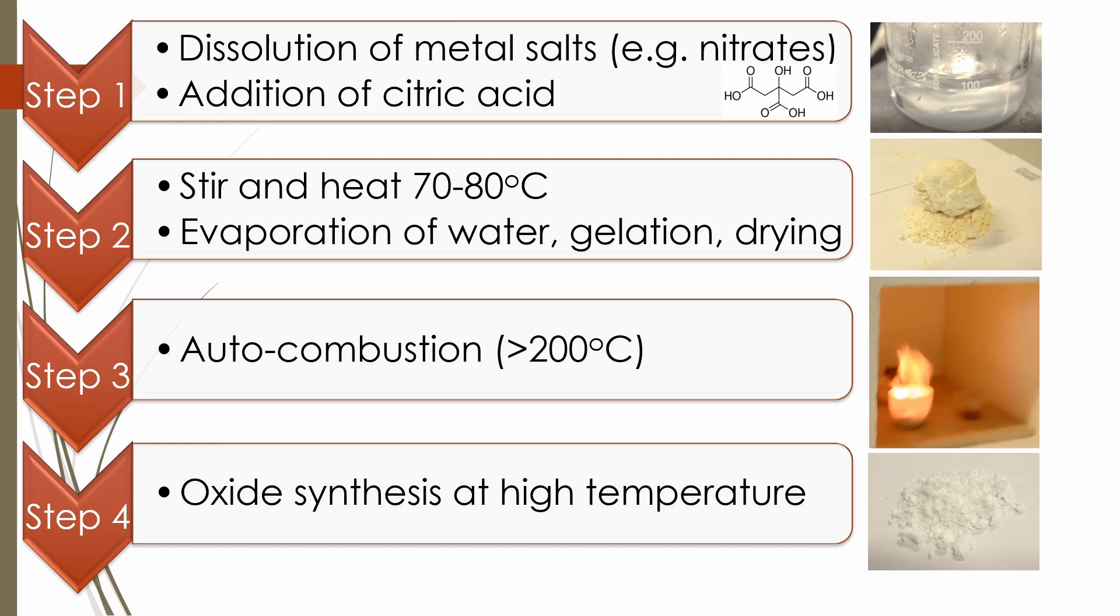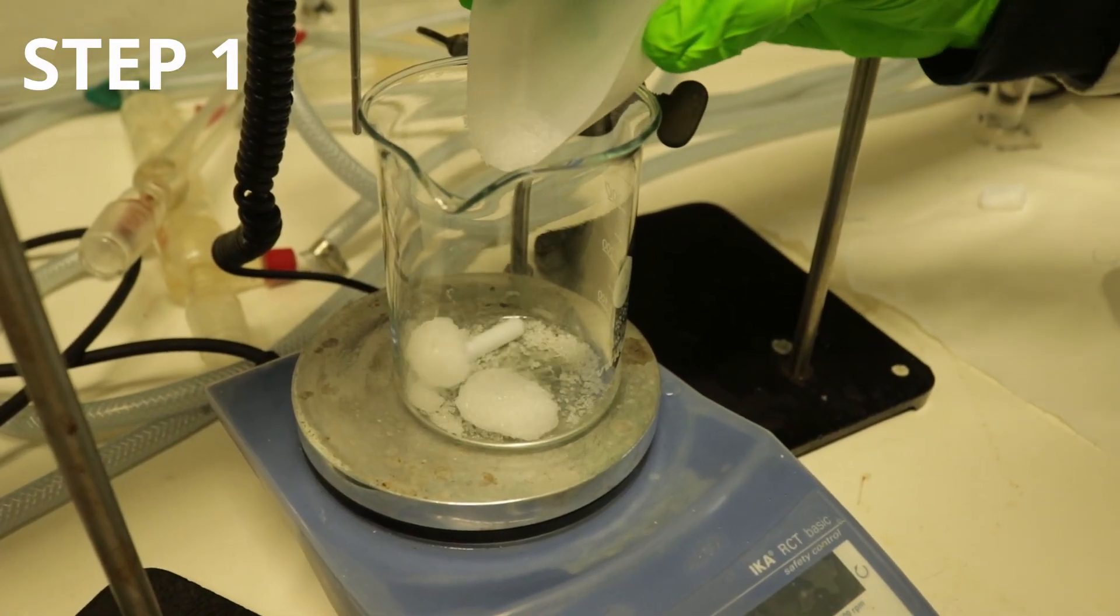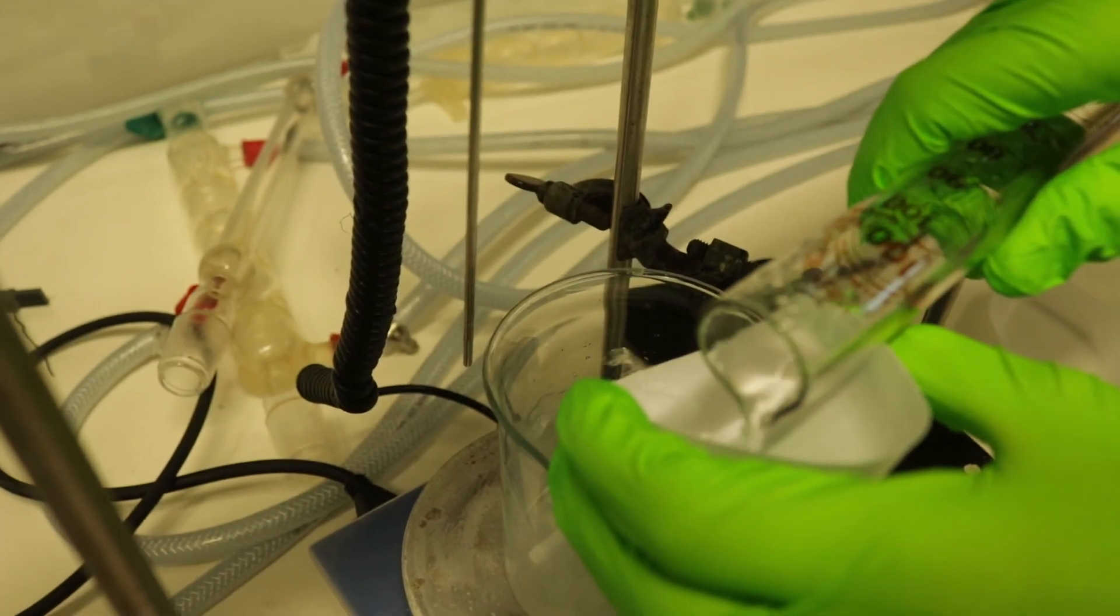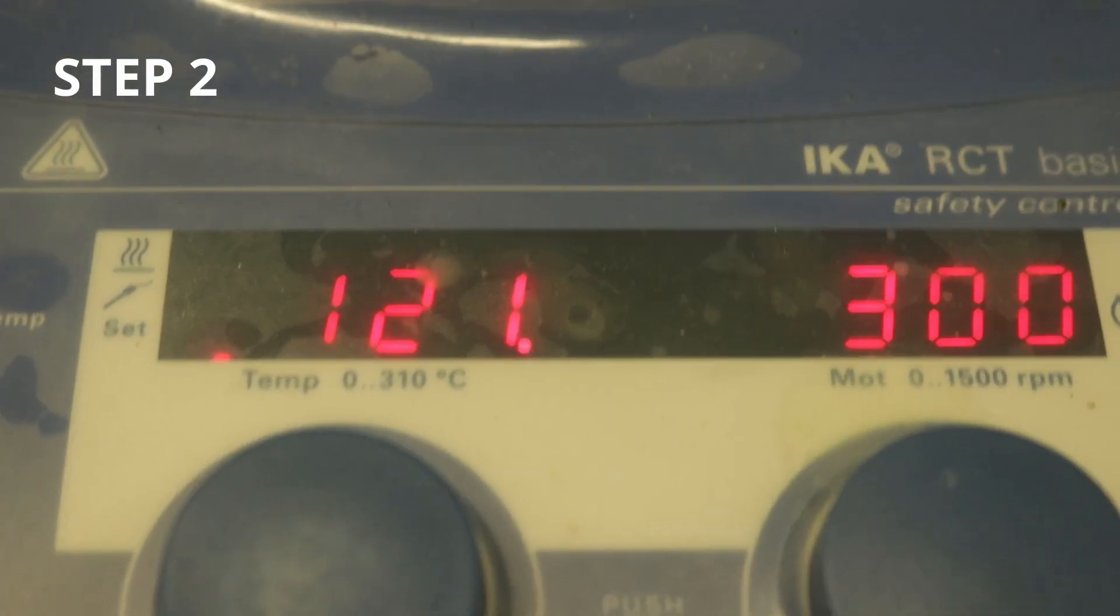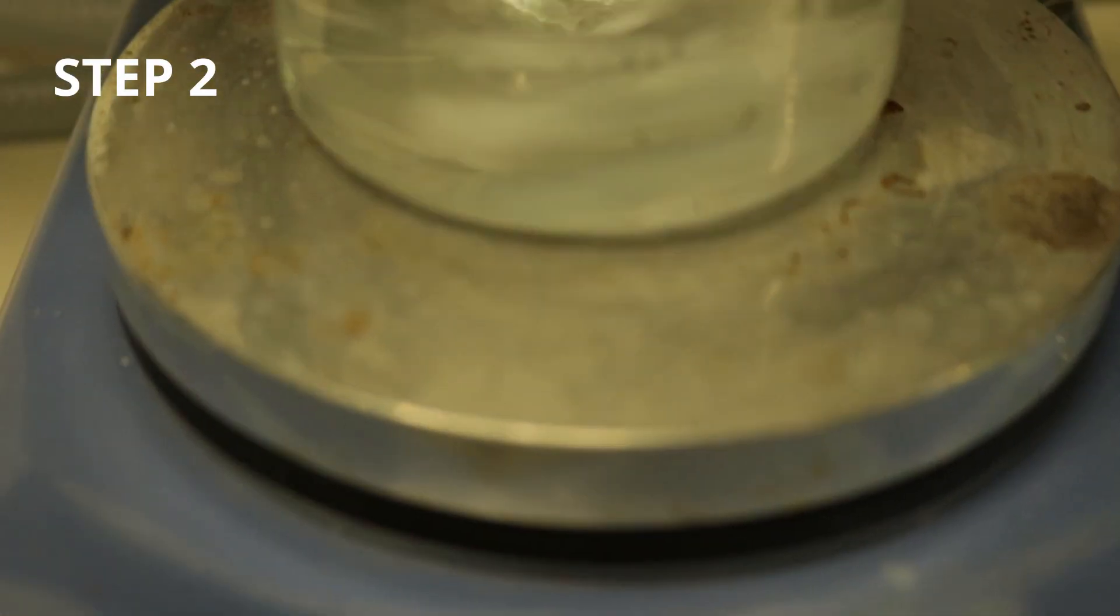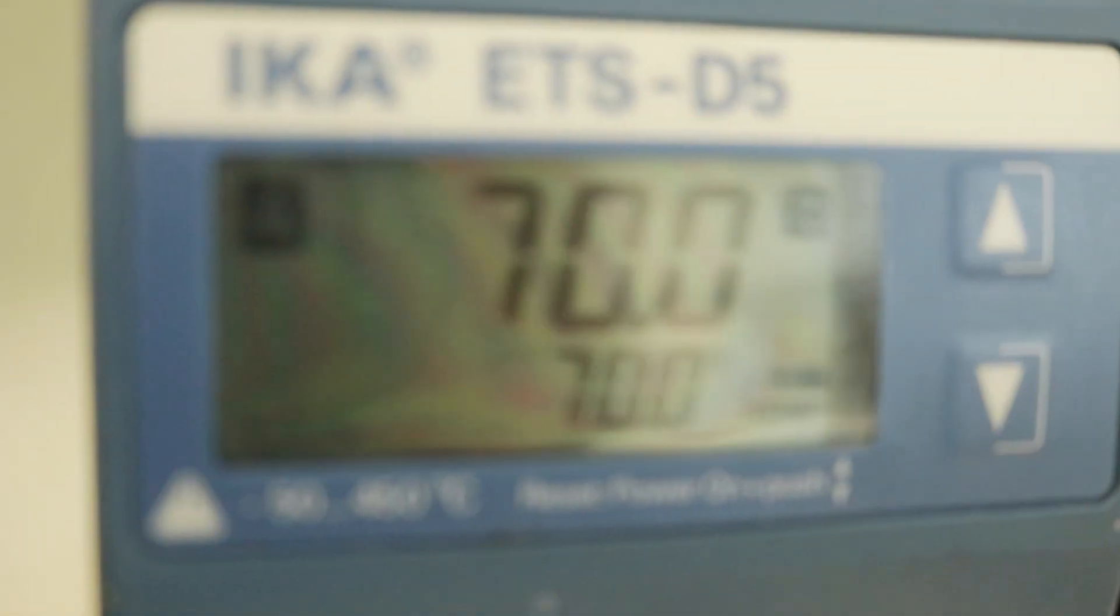In a typical synthesis, aqueous metal salts, for example nitrates, are mixed with citric acid and the resulting solution heated to form a viscous solution or gel.